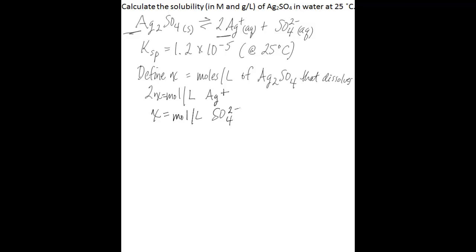Now substitute these values in terms of X into the Ksp expression. Ksp equals the silver ion concentration raised to the second power — because the stoichiometric coefficient for silver in the balanced equation is 2 — multiplied by the sulfate concentration. Note that silver sulfate, being a pure solid, is not included in this equilibrium expression; it's just the product of the ion concentrations.